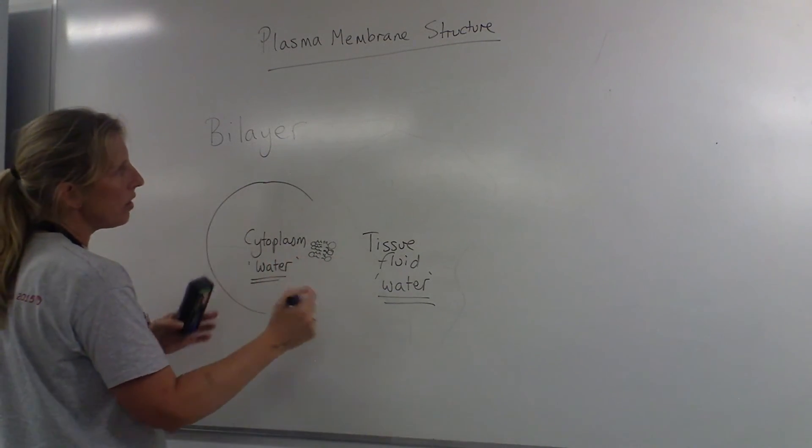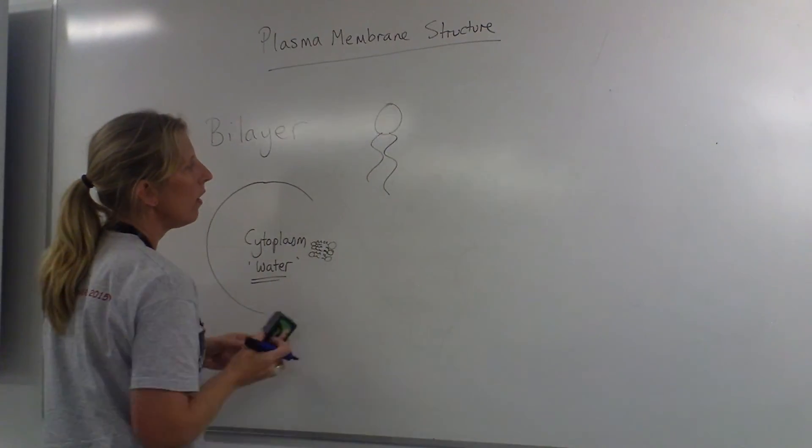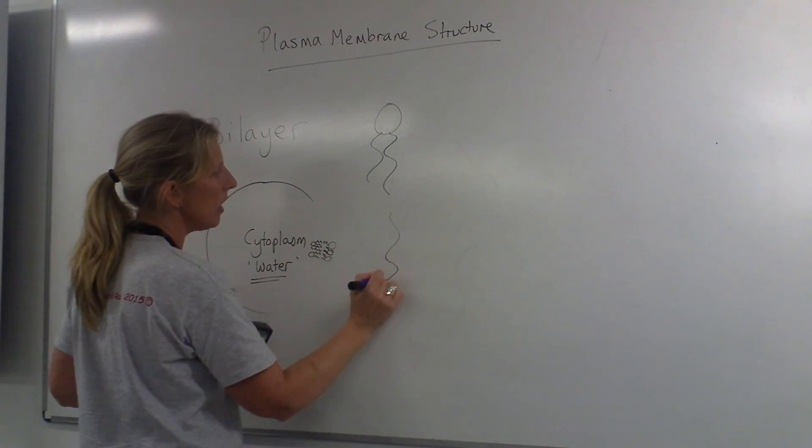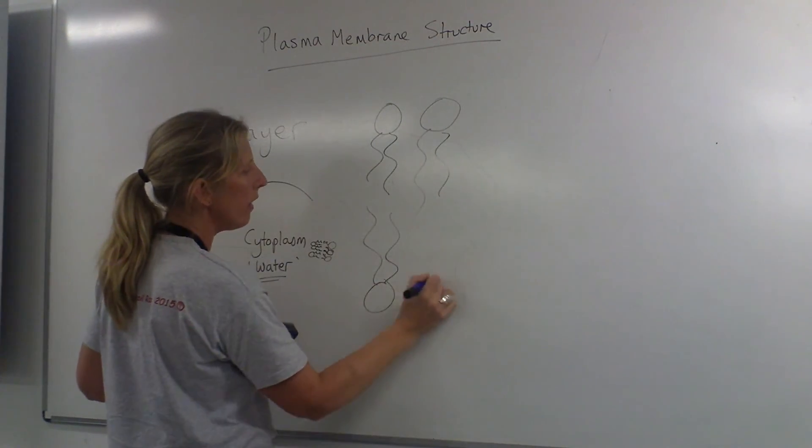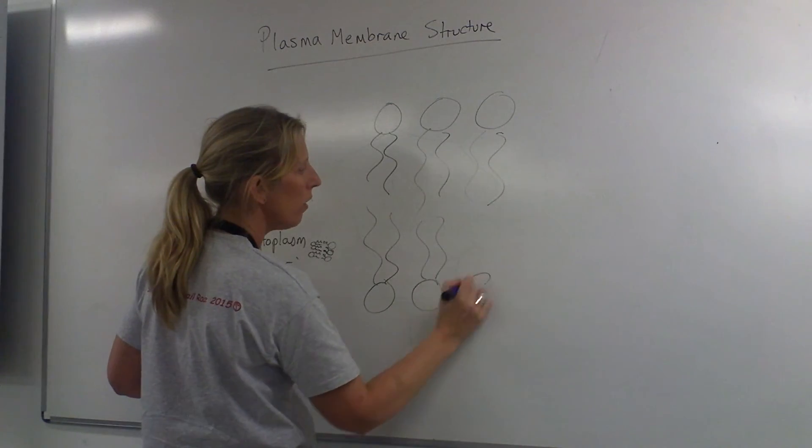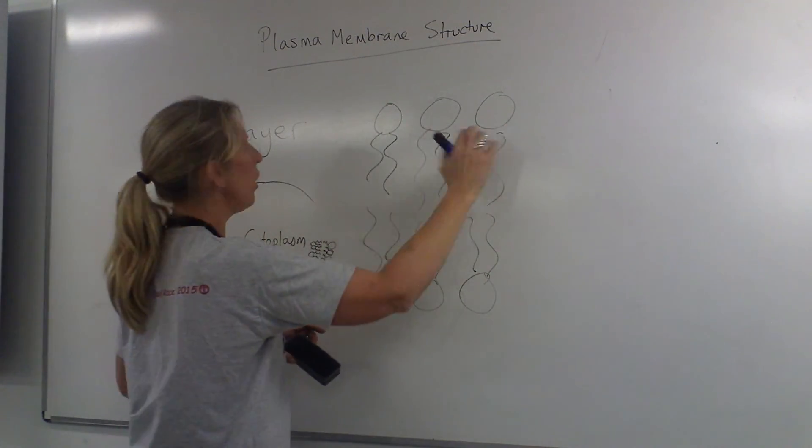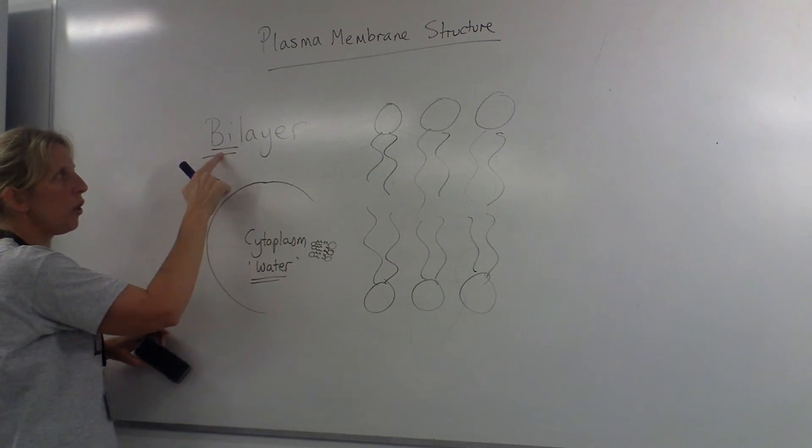So if we took a cross-section of the cell membrane, you should have seen this in a diagram in your booklet or been given it out on an A3 sheet. The phospholipids form a bilayer. There's one layer, there's two. Bilayer, two layers.